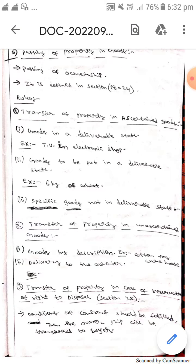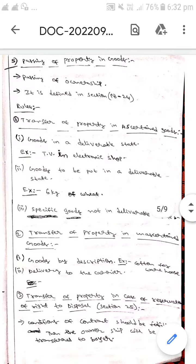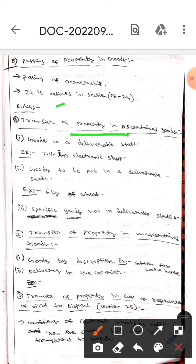So last again topic. Here the passing of property in goods means passing of ownership. It is defined in section 18 to 24. Whereas the rules for it is transfer property in ascertained goods.